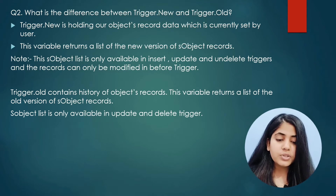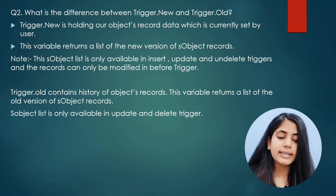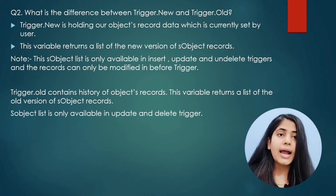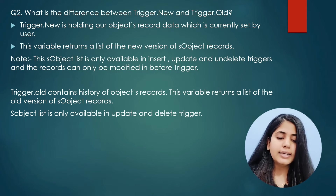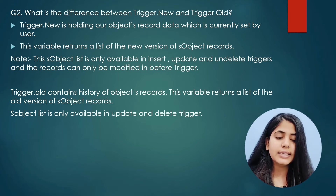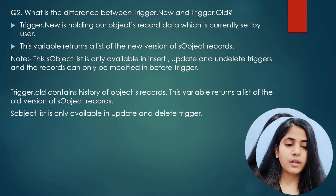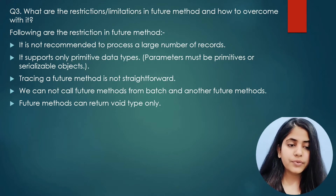Now, trigger.old contains the history of the object records and returns the old version of the sObject. trigger.old is only available in update and delete triggers.